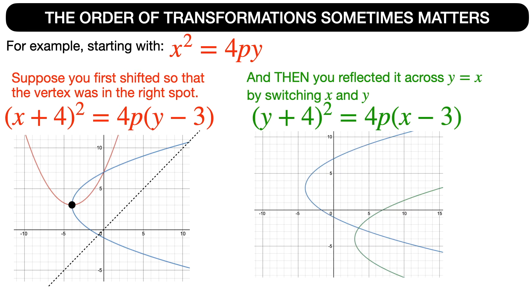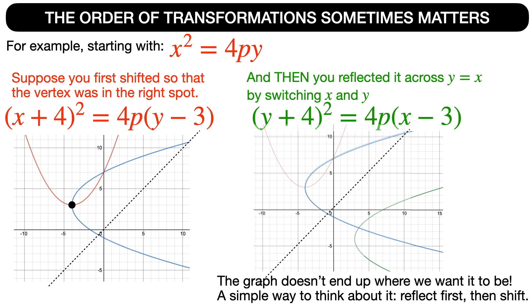And then if you switched x and y in the equation, you would reflect it across the line y = x. But the result of that reflection would be this green parabola, which isn't the blue parabola. In other words, this series of transformations did not wind up with the correct answer.